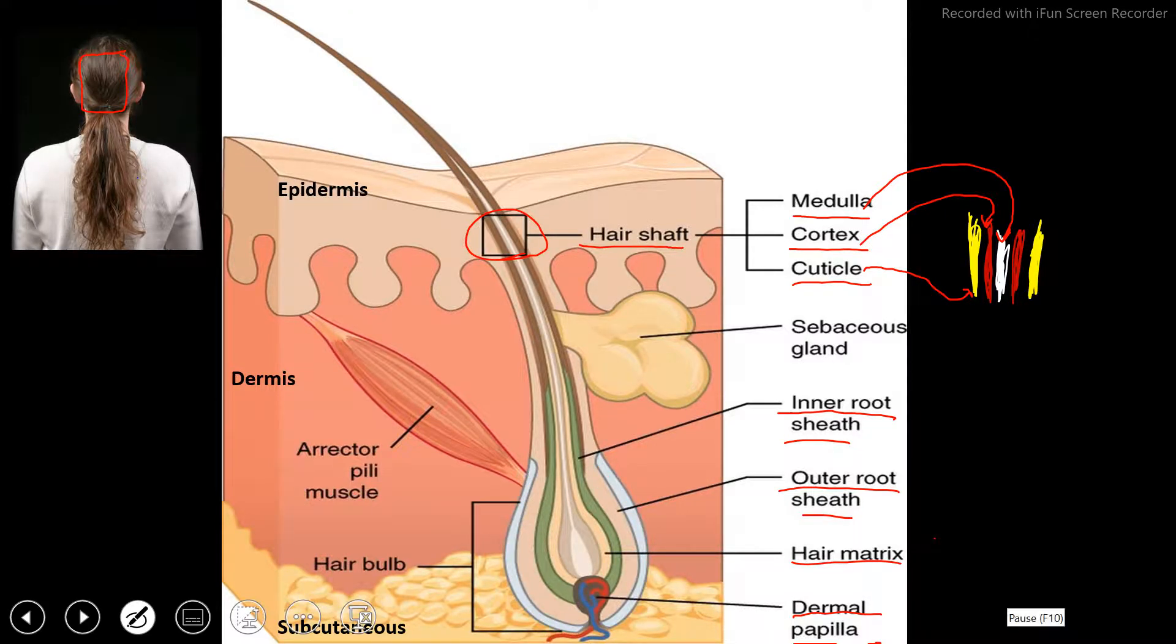Here we have the erector pili muscle. This muscle is used to make our hair stand on end, to erect our hair. When we get goosebumps, this is the muscle that's doing that. We get goosebumps when we're cold, and that's another way our body is trying to help get us warm.